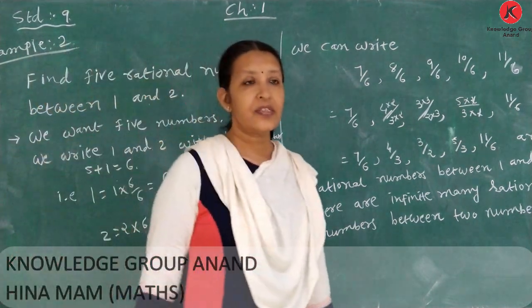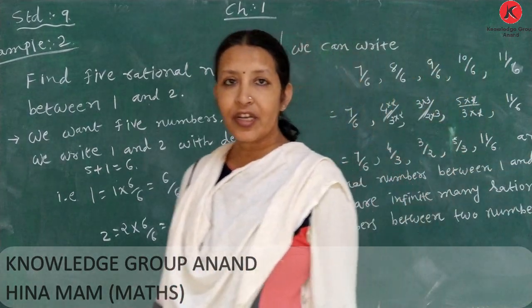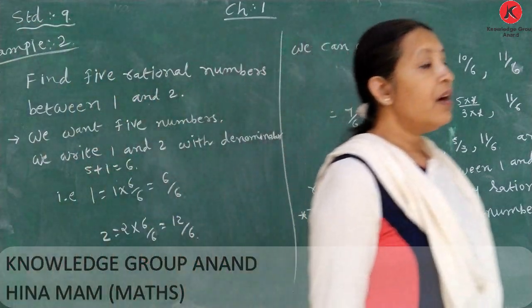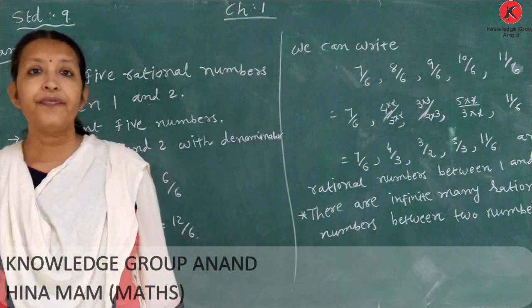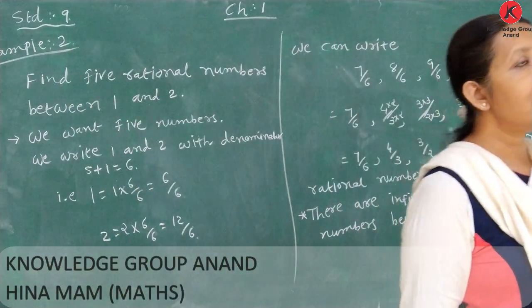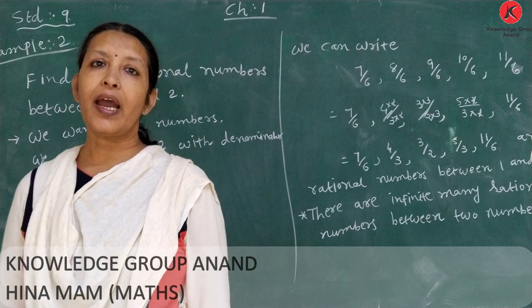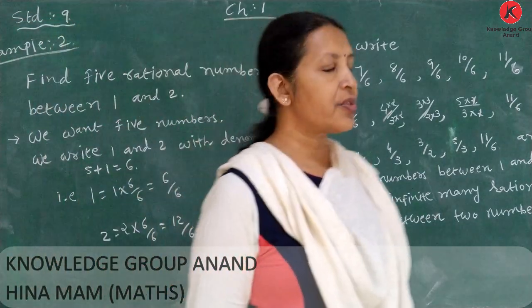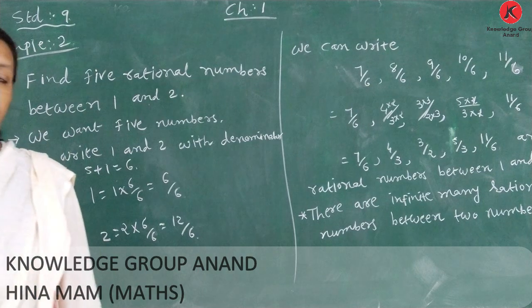Good morning students. In the previous lecture, we read about traditional numbers and example number 1. Now, which numbers are called rational numbers? If a number is denoted in the form P over Q, it is called a rational number, where P and Q are integers and Q is not equal to 0. Let's learn about rational numbers.